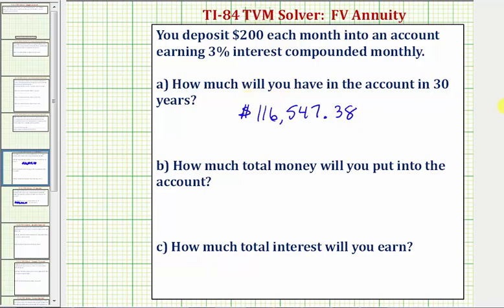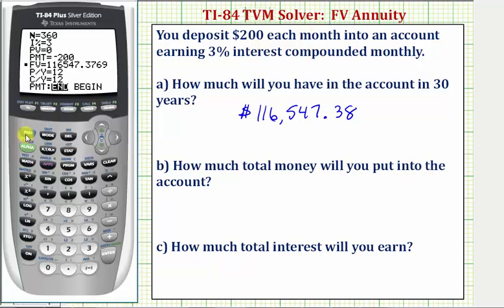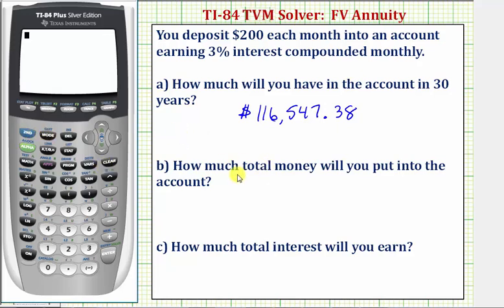Part B: how much total money will you put into the account? You're paying $200 a month for 30 years. Let's go to the home screen by pressing Second Mode. The total amount paid is $200 times 12 months times 30 years, which equals $72,000.